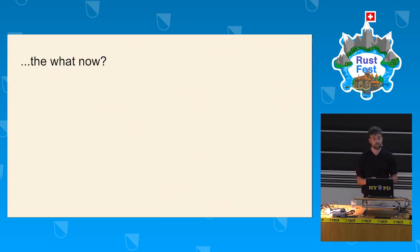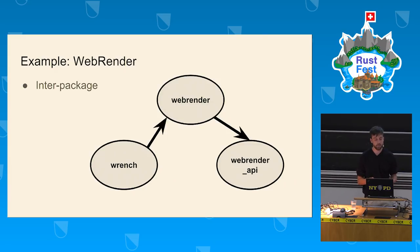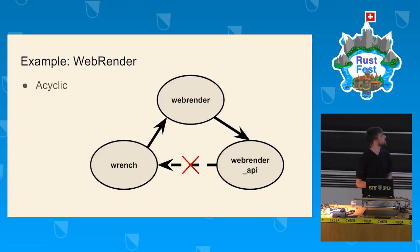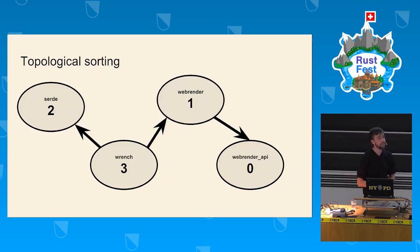Let's take the WebRender example, which consists of three packages: Wrench, WebRender, and WebRender API. The graph must be directed because dependency is directional — when package A depends on B, B does not depend back on A. It also has to be acyclic, because we need to know where to start when issuing a build. These properties guarantee that we can achieve a topological sorting of the graph.